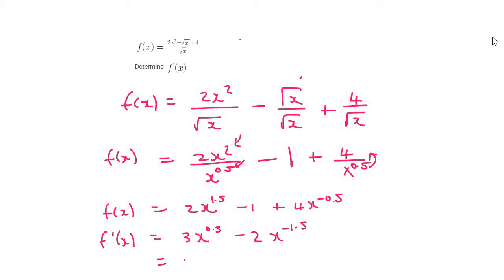And then what we do is we put our answer with positive exponents again: 3x to the 0.5 minus 2 over x to the 1.5.